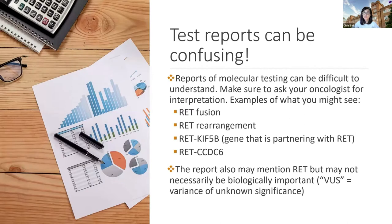Now, test reports can be very confusing. I know based on my own patients that many people like to look at their own reports, but they can be quite difficult to understand. So make sure you're asking your oncologist for an explanation. I listed some of the examples that you might see. Some reports may say RET fusion or RET rearrangement — that would be the most straightforward way to identify these on the reports.